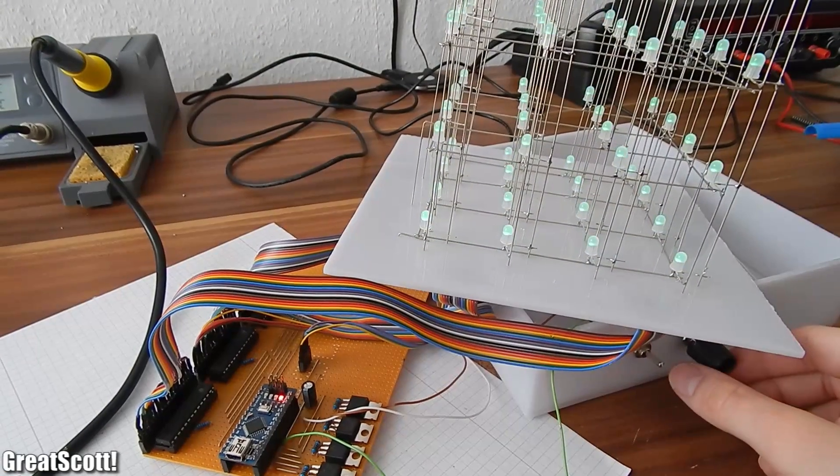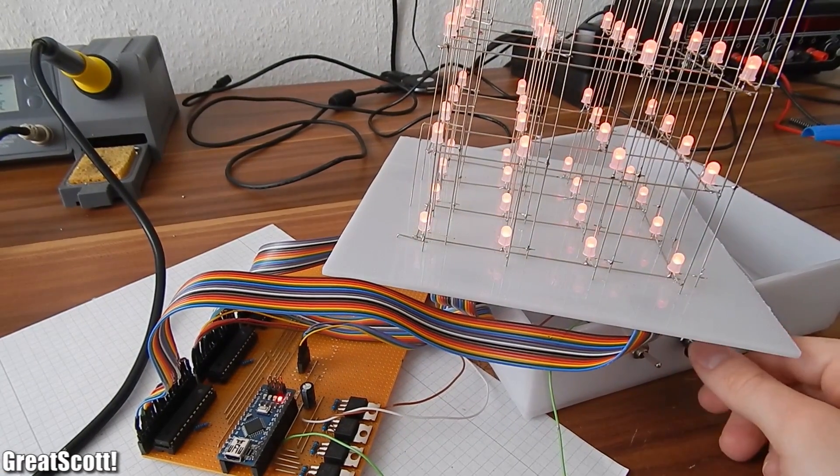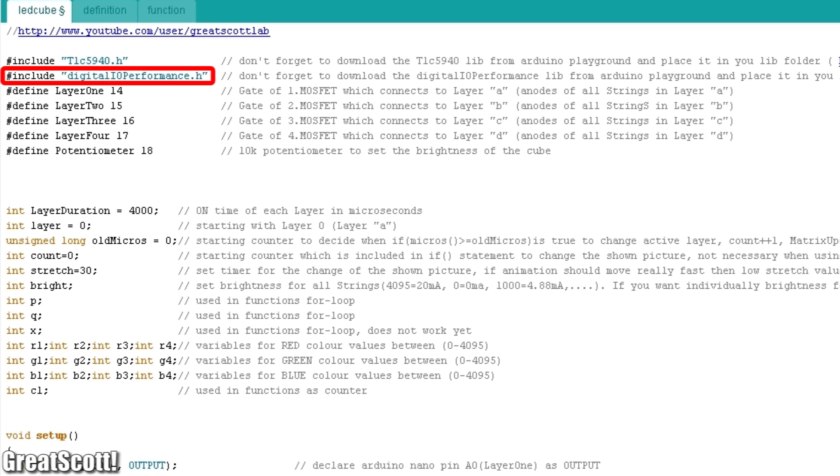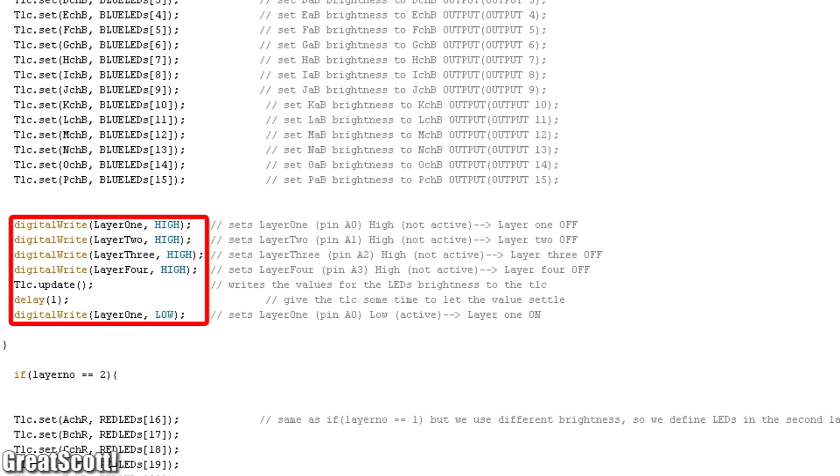These two things were basically all the hardware changes. Now let's take a look at the code. I included a second library called digitalIOPerformance because the digital write functions we use to multiplex are actually pretty slow.